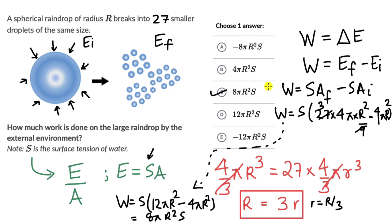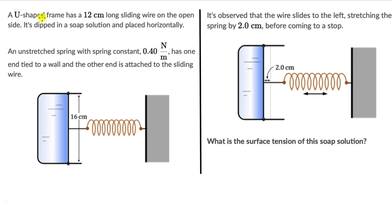Let's look at one more question, this one on surface tension. We have a U-shaped frame with a 12 cm long sliding wire on the open side. It's dipped in a soap solution and placed horizontally. An unstretched spring with spring constant 0.4 N/m has one end tied to a wall and the other end attached to the sliding wire. The wire slides to the left, stretching the spring by 2 cm before coming to a stop. What is the surface tension of the soap solution?